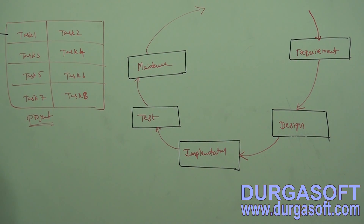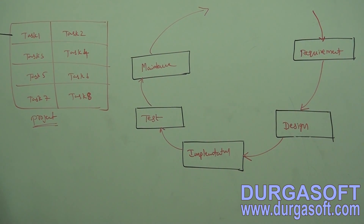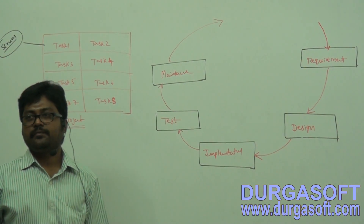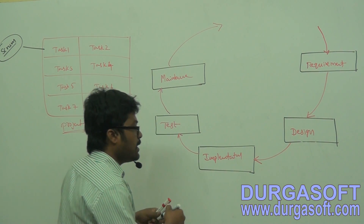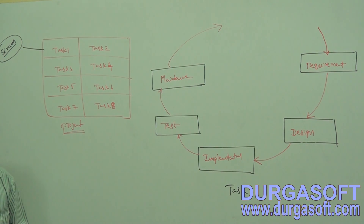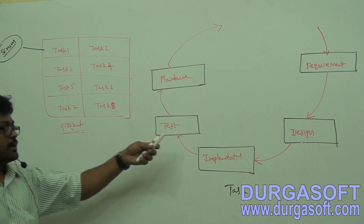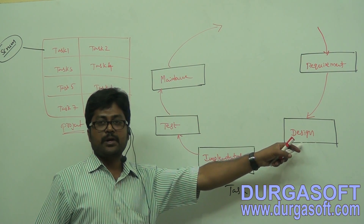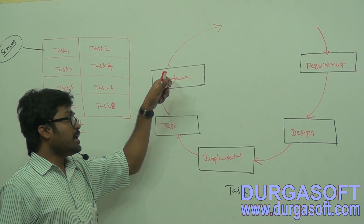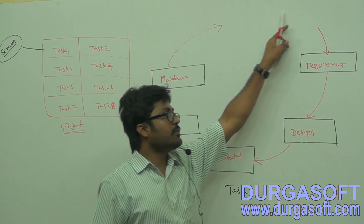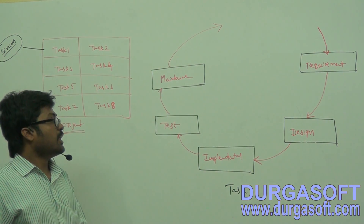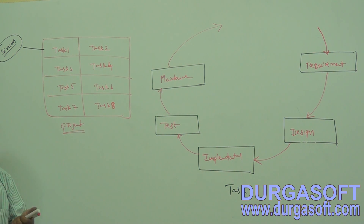This is actually an iteration model. Why the circle model? After completion of one lifecycle, again you have to start for one more task. For task one, if you use this lifecycle, for the next task, again you have to do the same lifecycle — requirement, designing, implementation, testing, then maintenance. After completion, again you move to the next level, and one more iteration will start. So they call this design model an iteration model.